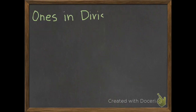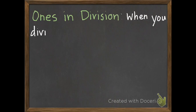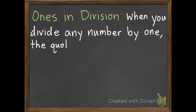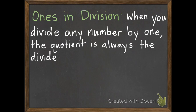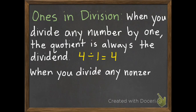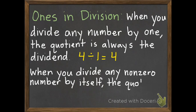Last of all, we have ones in division. Ones in division says when you divide any number by 1, the quotient is always the dividend. So if we have 4 divided by 1, the quotient is going to be the dividend — so 4. Ones in division also says when you divide any non-zero number by itself, the quotient is always 1.